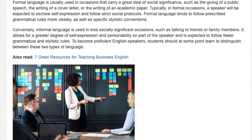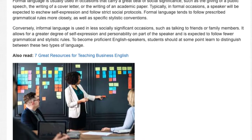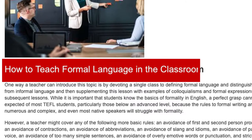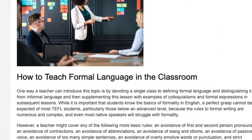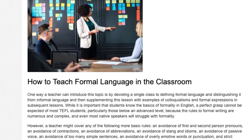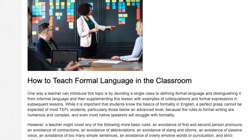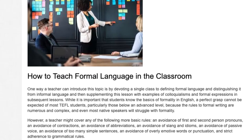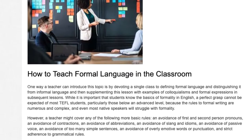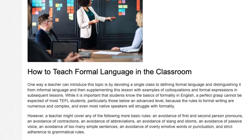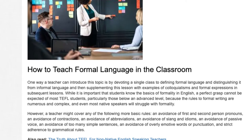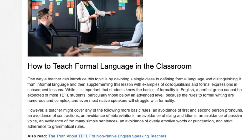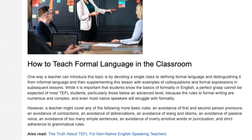To become proficient English speakers, students should at some point learn to distinguish between these two types of language. How to teach formal language in the classroom: one way a teacher can introduce this topic is by devoting a single class to defining formal language and distinguishing it from informal language, and then supplementing this lesson with examples of colloquialisms and formal expressions in subsequent lessons.